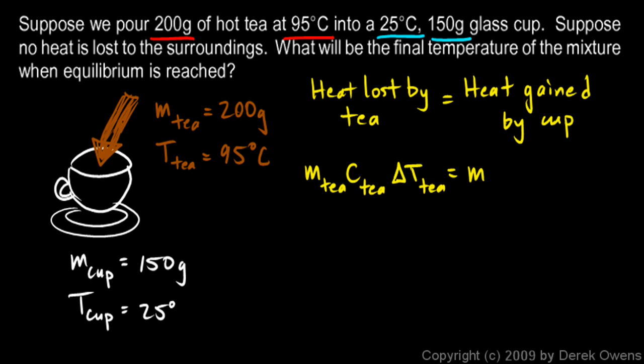That's the mass of the cup times the C, the specific heat of the cup, times the delta T of the cup. So the heat lost by the tea, MC delta T, is equal to the heat gained by the cup, MC delta T for the cup.